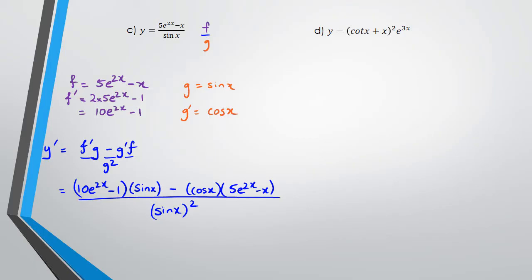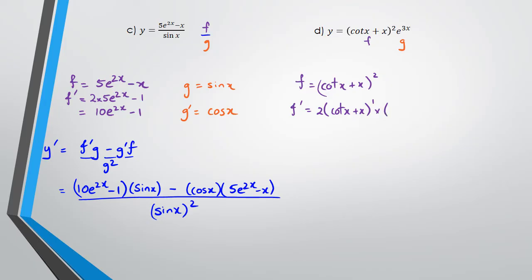Question D — we've got f multiplied by g, so this is product rule. I need to work out f first. f = (cot x + x)², so I have to use chain rule. f' = 2(cot x + x) × the differentiation of (cot x + x), which is (−csc²x + 1). So f' = 2(cot x + x)(−csc²x + 1). And for g: g = e^(3x), which means g' = 3e^(3x).